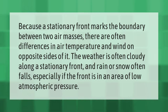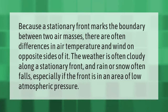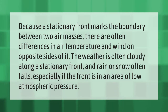Because a stationary front marks the boundary between two air masses, there are often differences in air temperature and wind on opposite sides of it. The weather is often cloudy along a stationary front, and rain or snow often falls, especially if the front is in an area of low atmospheric pressure.